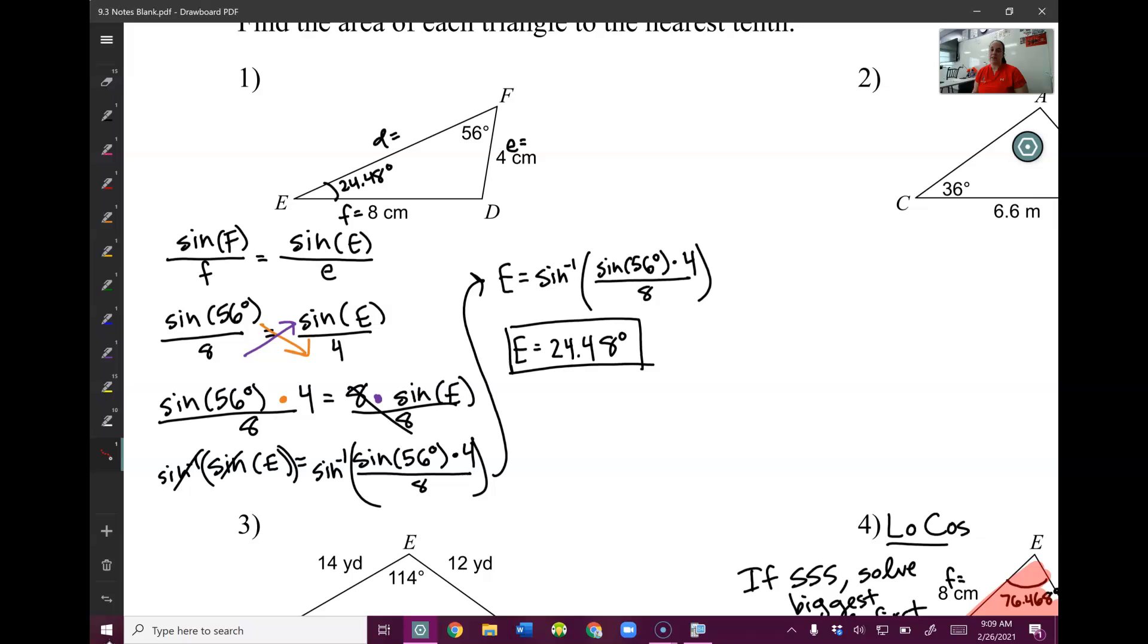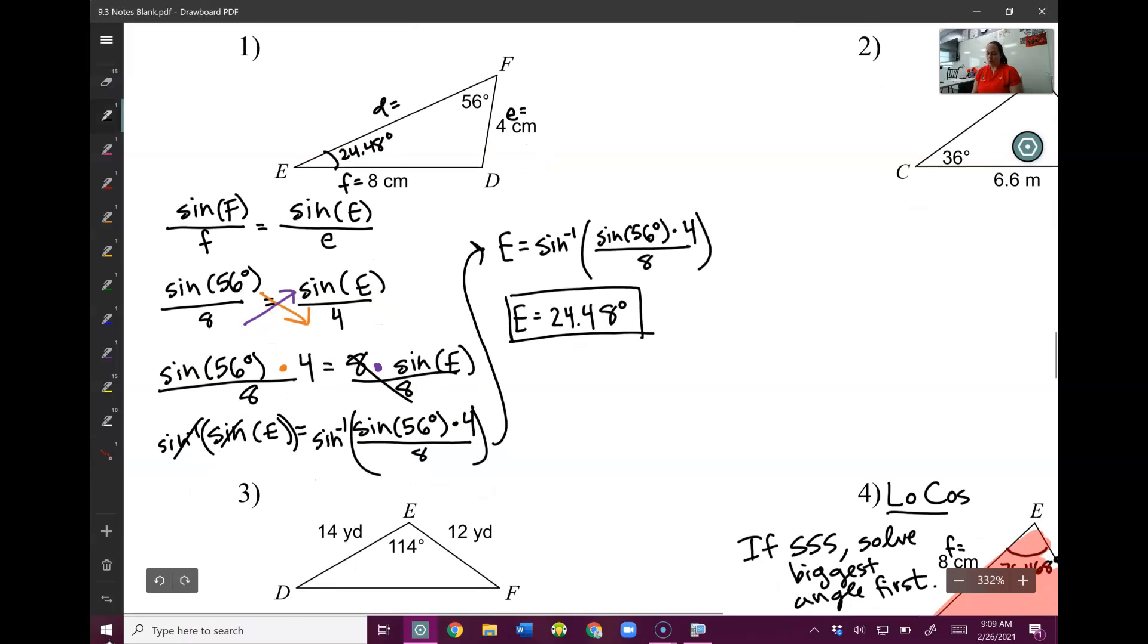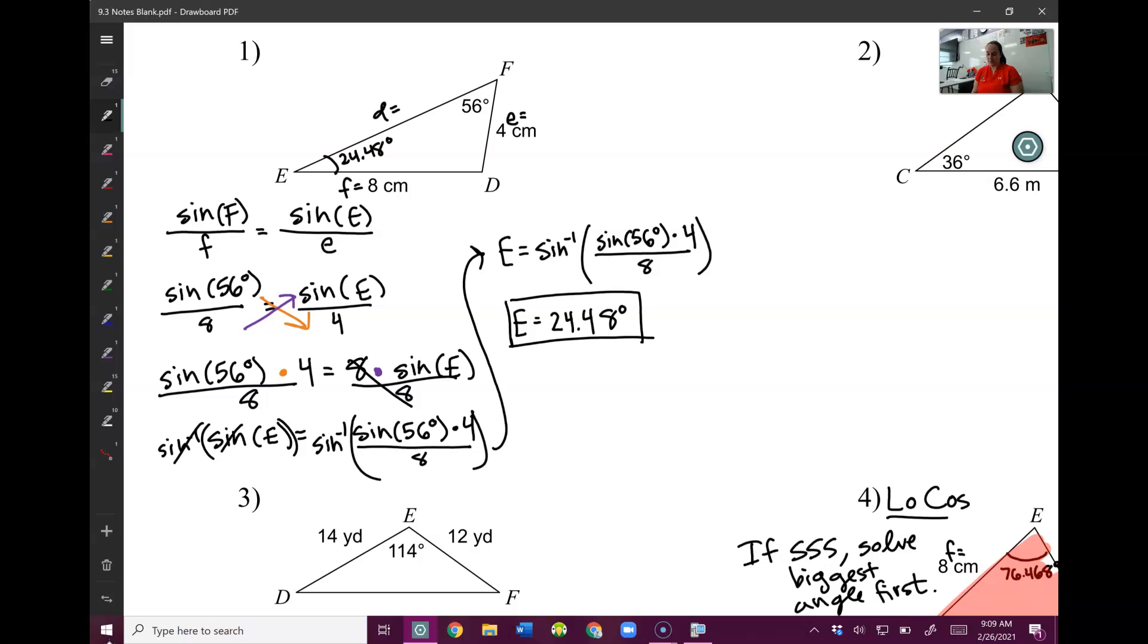Now notice, remember, the whole point of this is I need two sides and the angle between them. I have this angle, I do not have the two sides around it. I have this angle, I do not have the two sides around it. So I am not there yet. We're going to do one more thing because I have two angles, which means I can solve for the third angle using my 180 rule. If I plug that in with my 180 rule, I get 99.52. And now let's check. I have two sides and the angle between.